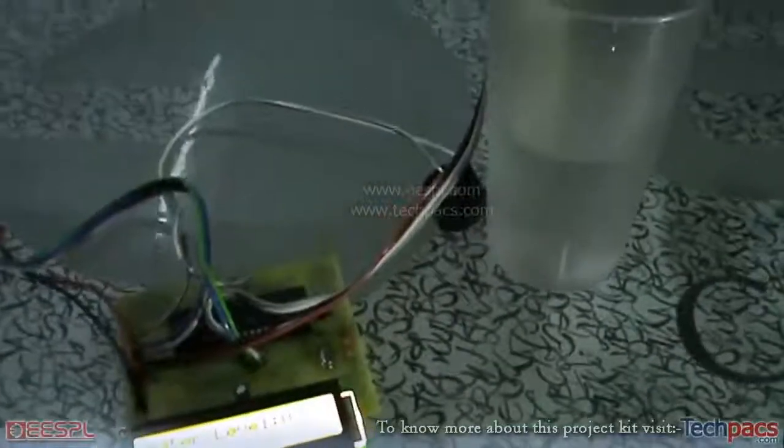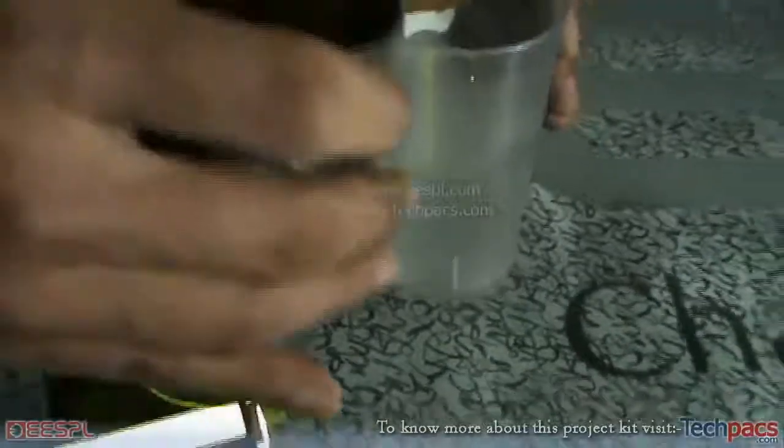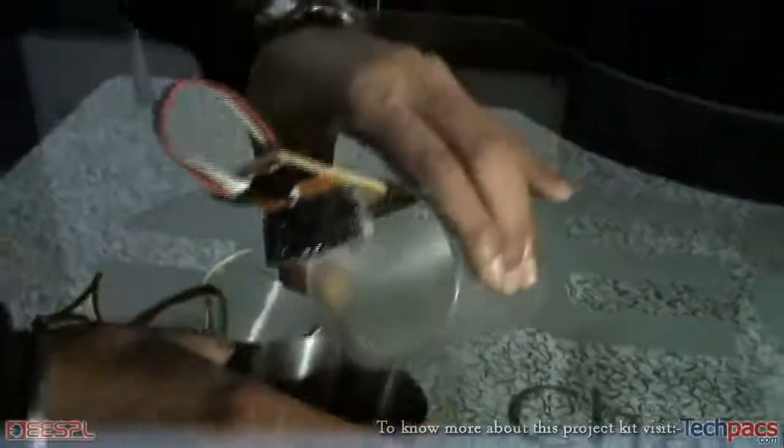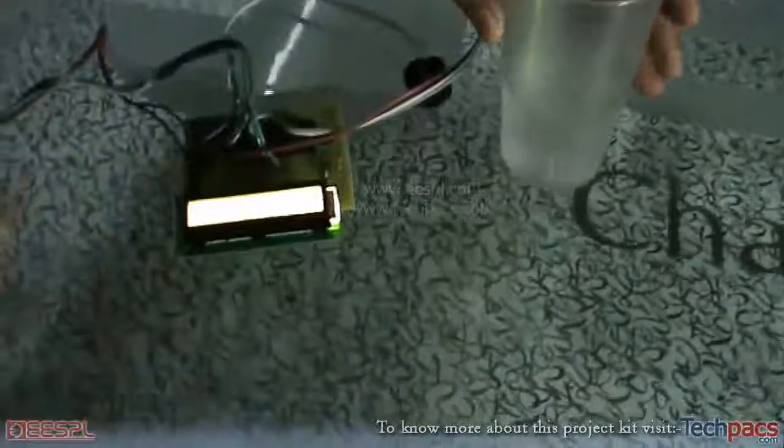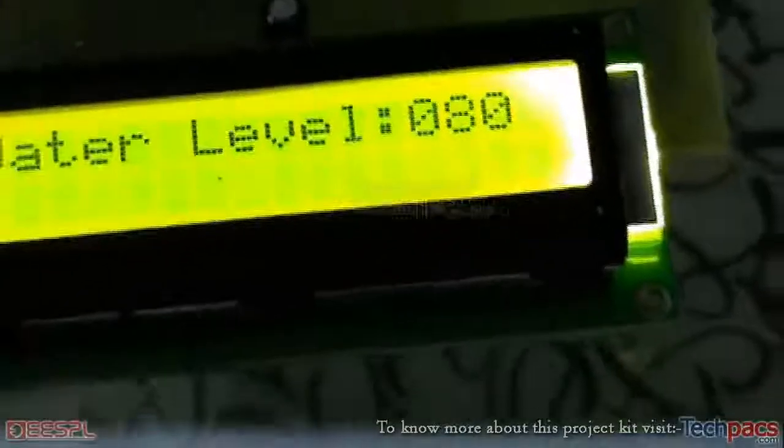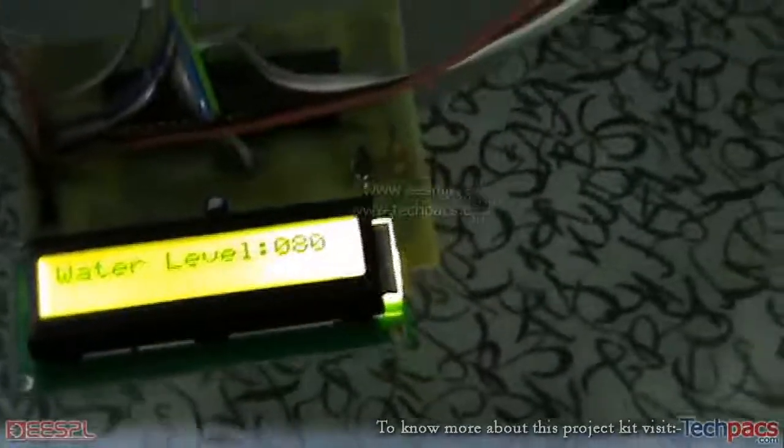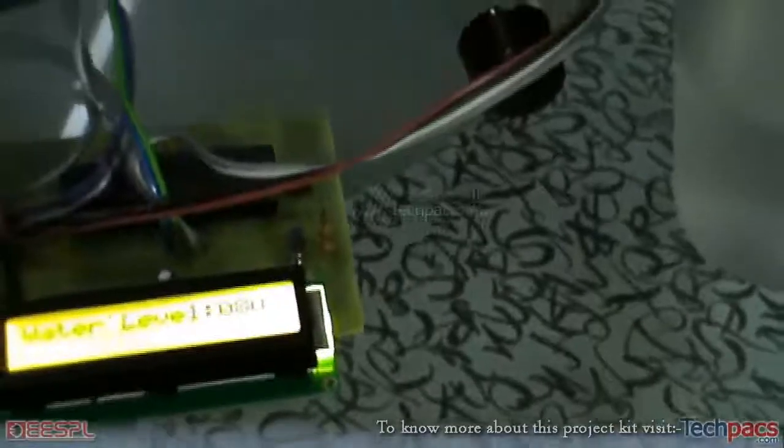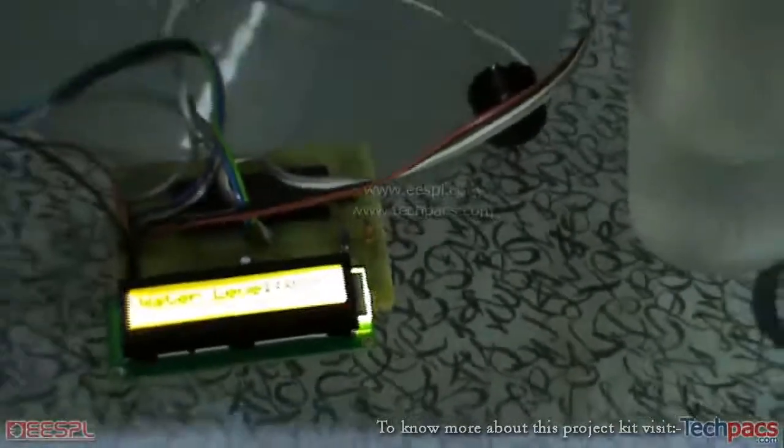If we remove the water, you can see the level fall down to 80. This way this can be really helpful as the sensors have a long range, so we can measure large levels of water rising and falling and can give an alert in case it reaches the hazardous levels.